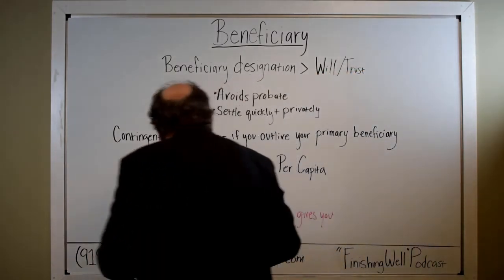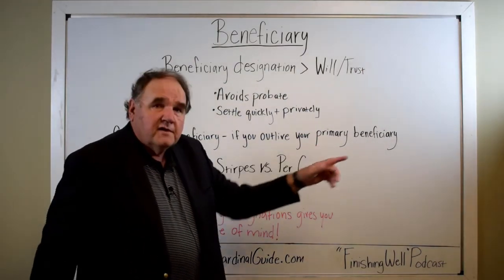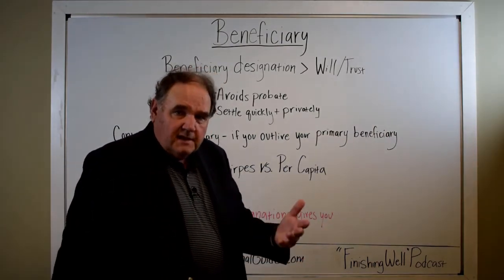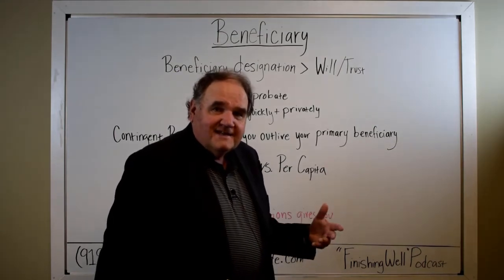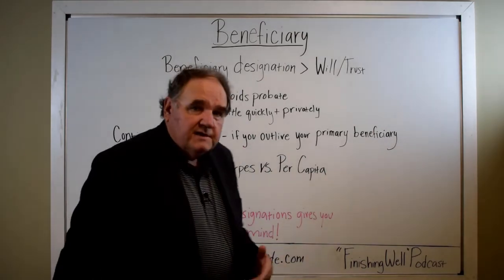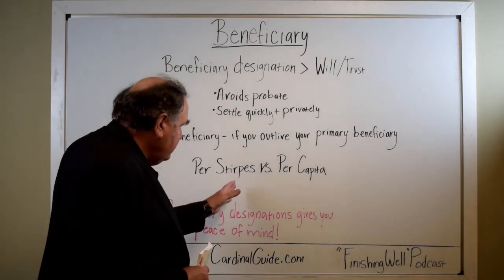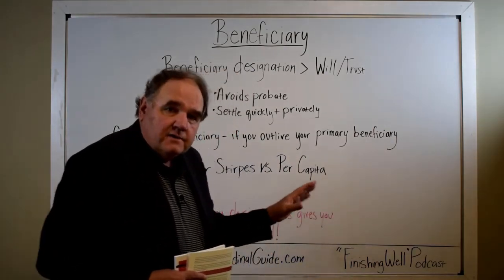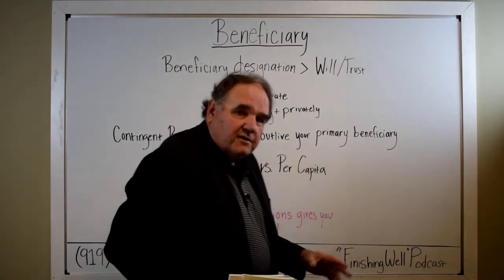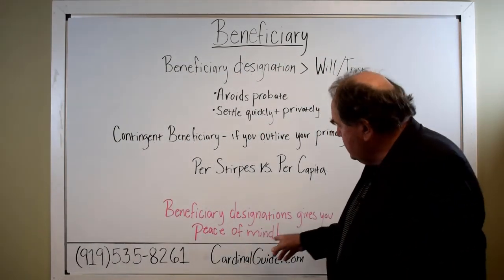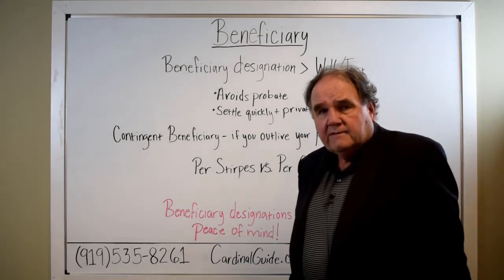We also want to talk about contingent beneficiaries. A contingent beneficiary doesn't mean anything if the primary beneficiary is alive when you pass. But because many people don't keep their beneficiaries updated, there are situations where the primary beneficiary is deceased, and the contingent beneficiary simply becomes the beneficiary. There's also the designation of whether you name them per stirpes or per capita — too long to get into here, but that's another important distinction in how you name your beneficiaries. A properly completed and updated beneficiary designation gives you the peace of mind that your beneficiaries will receive the money after you pass away.